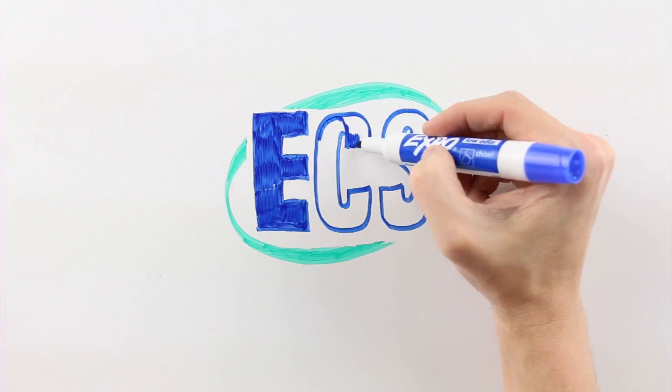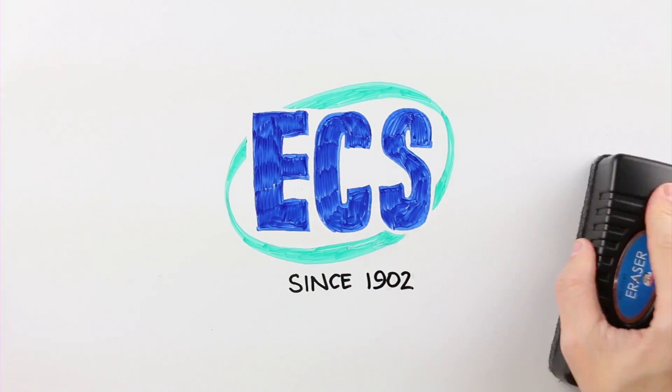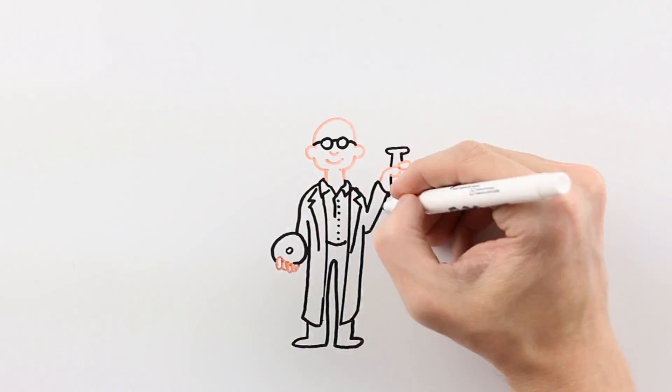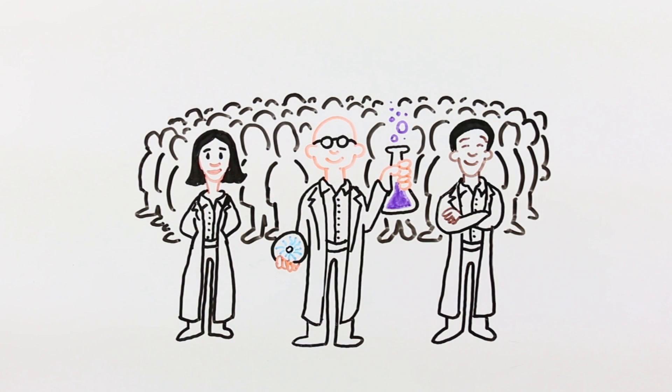We're the Electrochemical Society. We started publishing scientific research in 1902. We're electrochemists, right? Solid-state scientists, okay? Engineers, too. We're led by scientists for scientists.